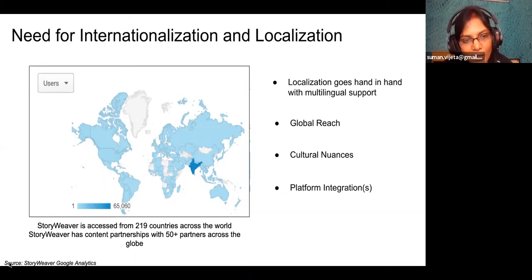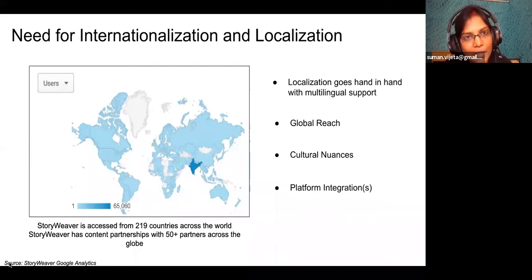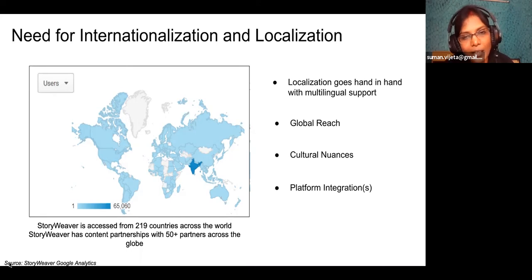From Storyweaver's perspective, being multilingual at a scale of 259 languages means localization goes hand in hand — no question asked. For global reach across 219 countries, we want to do it. On cultural nuances: for example, I cannot render Storyweaver with a picture of a girl dancing for an Afghanistan partner, because it is against their cultural norms. So localization is not just changing the language or currency or time — it is also the cultural part of it.